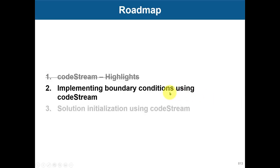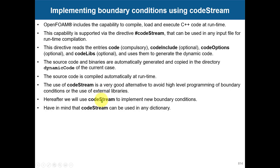Welcome to this lecture on implementing boundary conditions using codeStream. OpenFOAM includes the capability to load and execute C++ code at runtime. We have done this previously in blockMesh for parameterization, but you can also use this directive called codeStream with any dictionary. This directive reads the code where you implement your actual boundary condition, plus options to load libraries and include files. Everything is compiled dynamically — the moment you launch the solver, it compiles and the boundary condition becomes available on the fly.